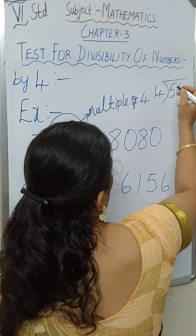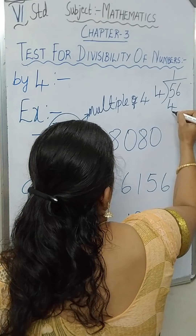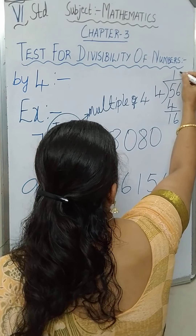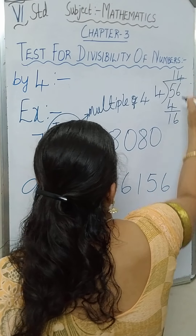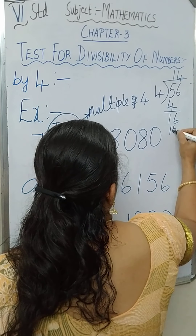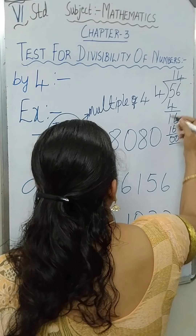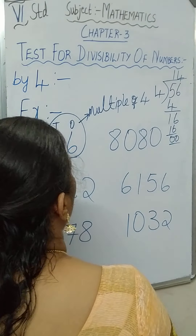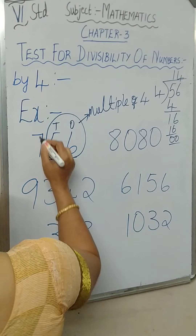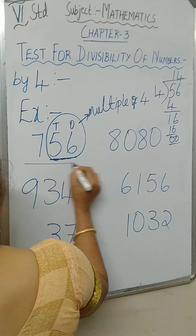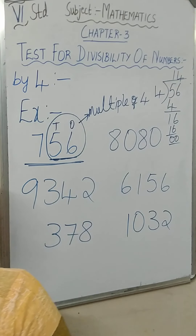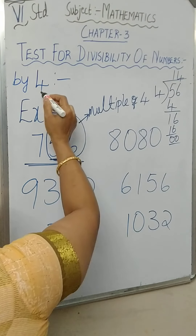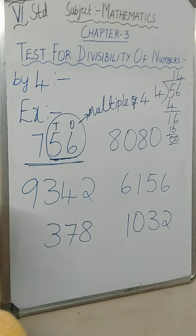For 756, the last two digits are 56. When you divide 56 by 4: 4 ones are 4, 1 is remaining, then 4 fours are 16. So 56 is divisible by 4, and therefore 756 is divisible by 4.